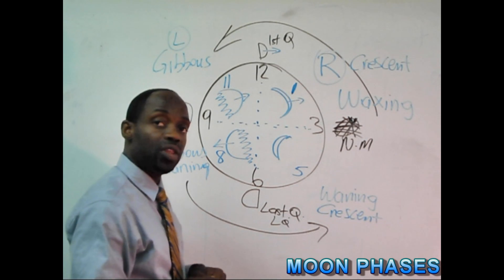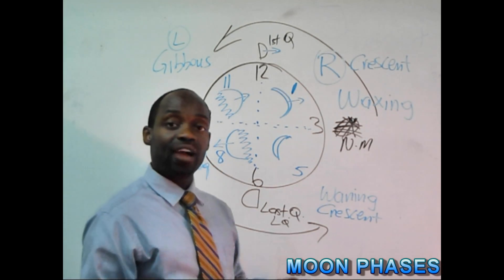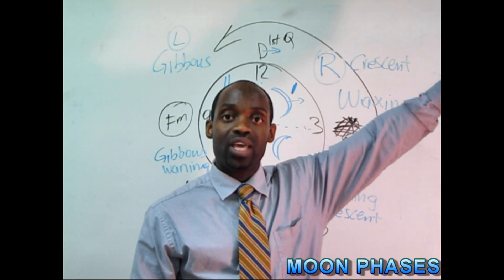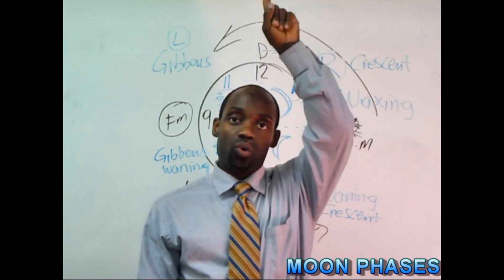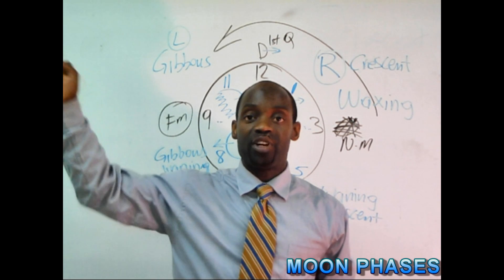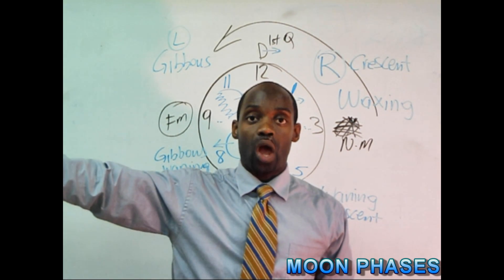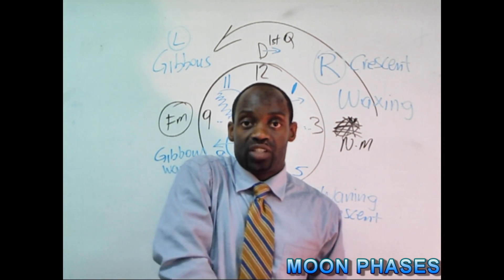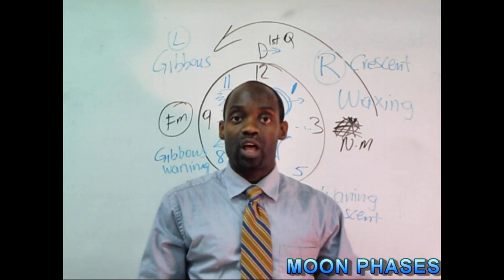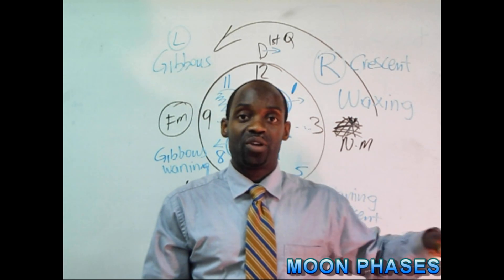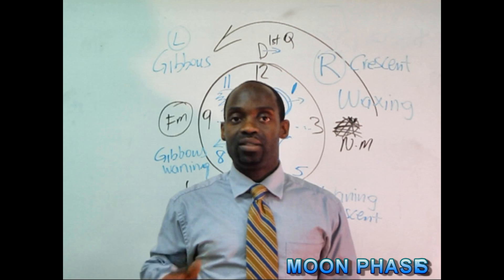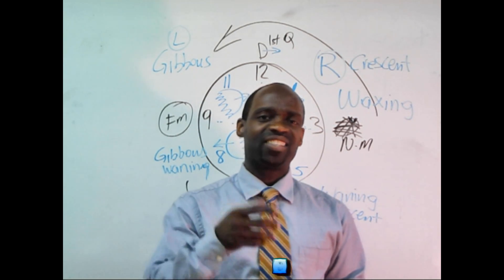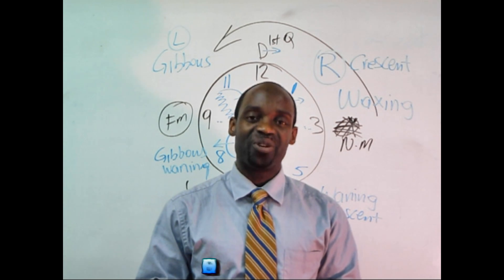So do you think you can remember the phases of the moon without looking at a graphical organizer? Here we go: 3 o'clock — new moon; 1 o'clock — waxing crescent; 12 o'clock — first quarter; 11 o'clock — waxing gibbous; 9 o'clock — full moon; 8 o'clock — waning gibbous; 6 o'clock — last quarter; 5 o'clock — waning crescent. So 3, 1, 12, 11, 9, 8, 6 — that's remembering the phases of the moon by using your clock. This is Andrew, just trying to make science more practical for you. Be sure to leave a comment. Take care.